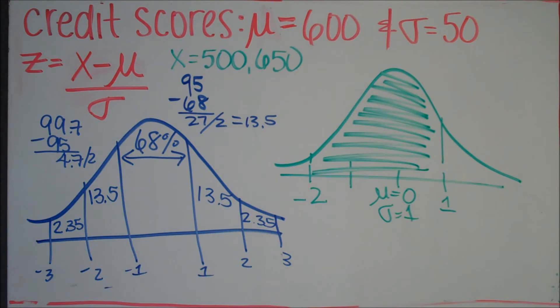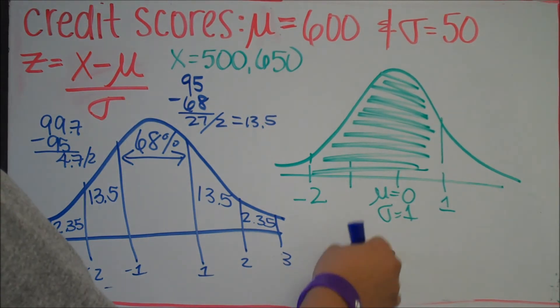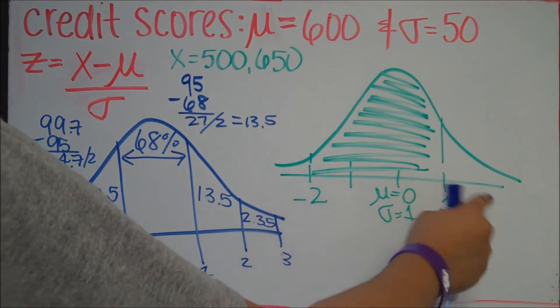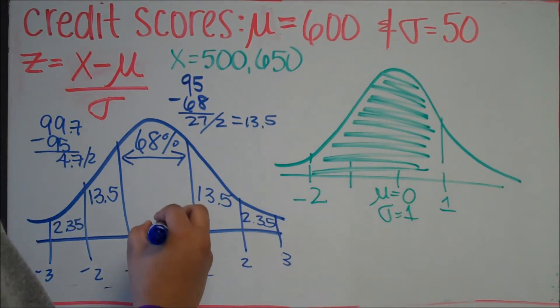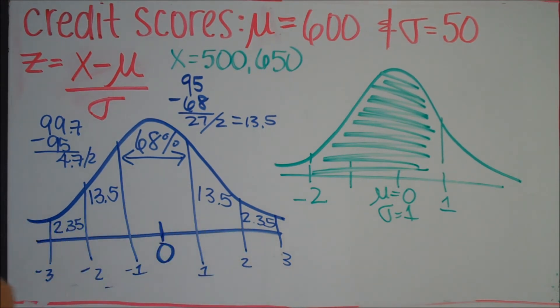So those are the percentages divided up into the entire graph between standard deviations. So our graph here shows that we are 2 standard deviations to the left and 1 standard deviation to the right. Remember that the mean is 0. That's where we're starting from here.